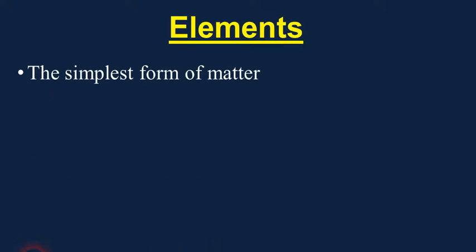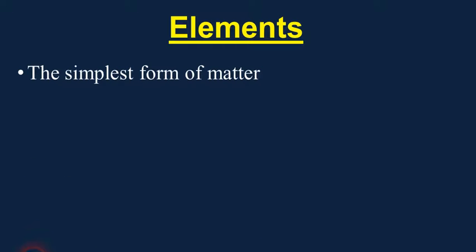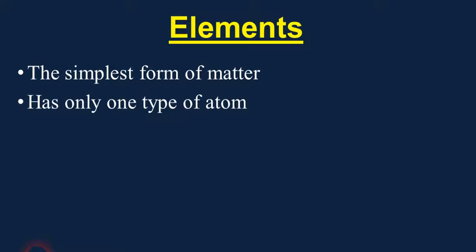Let's start with the first type, which would be the simplest type of matter: elements. We say that they're the simplest form of matter because elements have only one type of atom. That's why we can say that elements are also the purest form of matter. If you have an element like gold, those atoms are basically just gold atoms — just one type. If it's truly pure, there should not be any atoms of other elements in there.